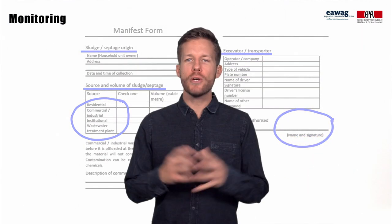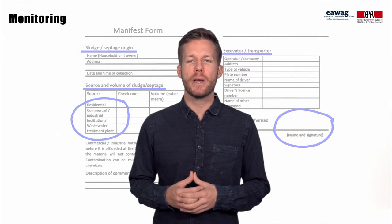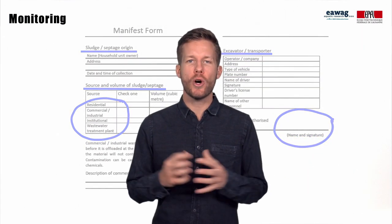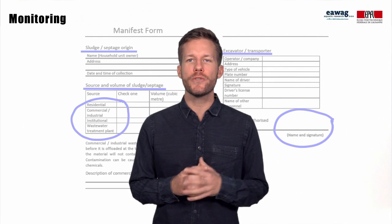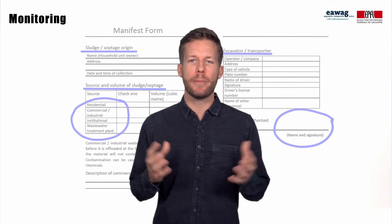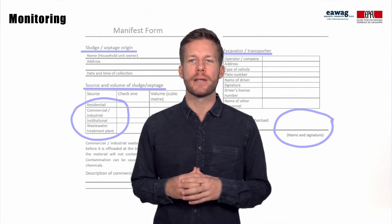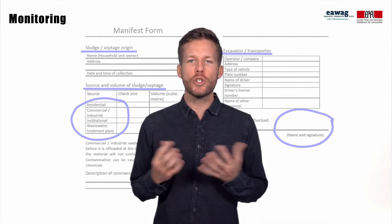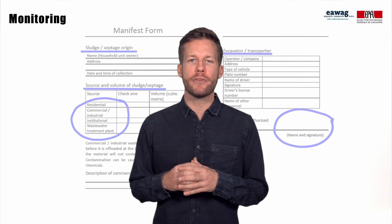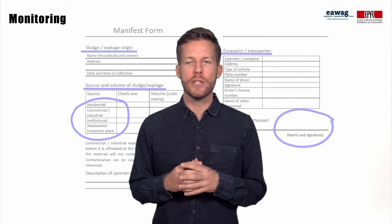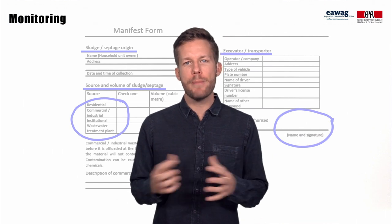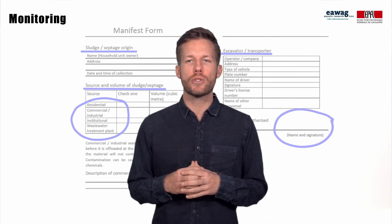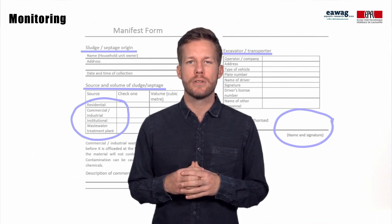Upon arrival at the treatment plant, the treatment operator has to approve the manifest form in line with the capacity of the treatment plant. This could be a way to identify industrial contaminations, for example when sludge from industries is delivered.